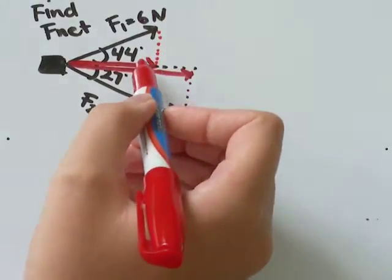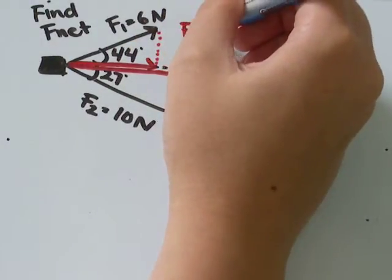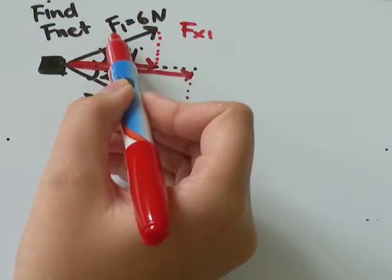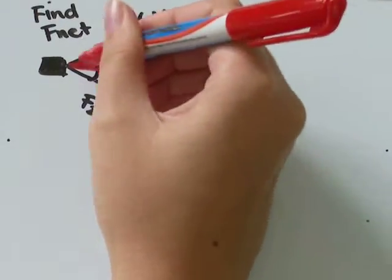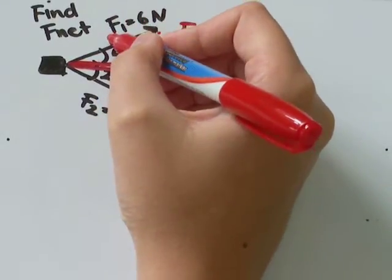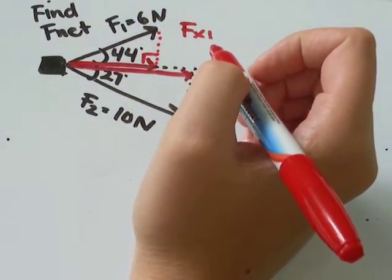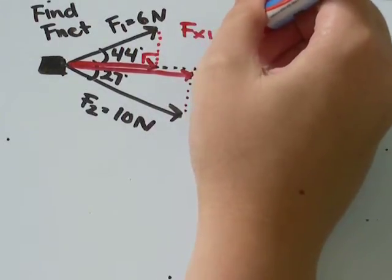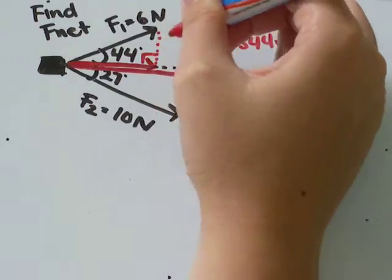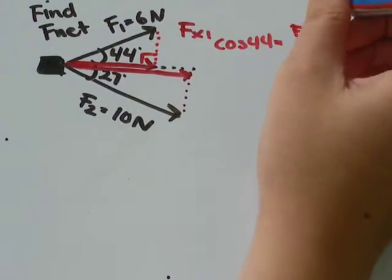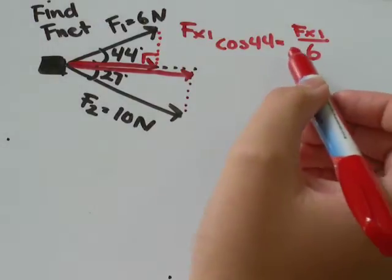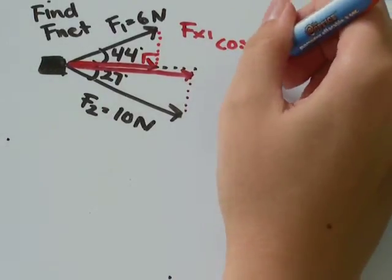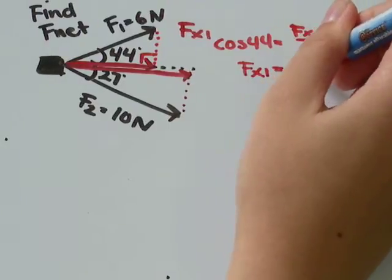So I'm going to call the first one, the shorter one, I'm going to call that Fx1. So it's the first force and it's the x component of it. So this sort of makes a 90 degree triangle. I'm trying to find the adjacent side, and I know the magnitude of the hypotenuse is 6 newtons. So I am going to use cosine. So I'll go cos 44 equals adjacent, which I'm calling Fx1, over hypotenuse, the magnitude of that is 6. So cos 44 times 6, I got that equals 4.31 newtons.